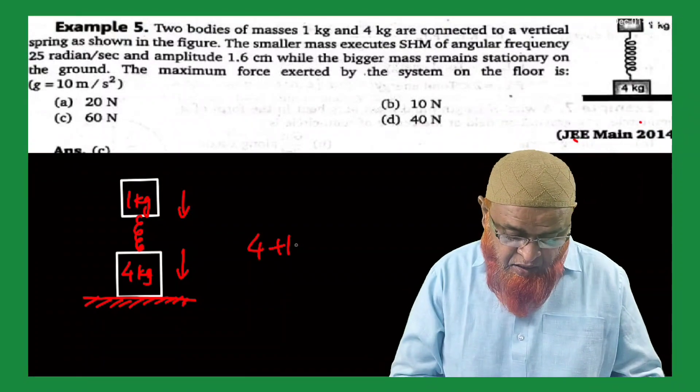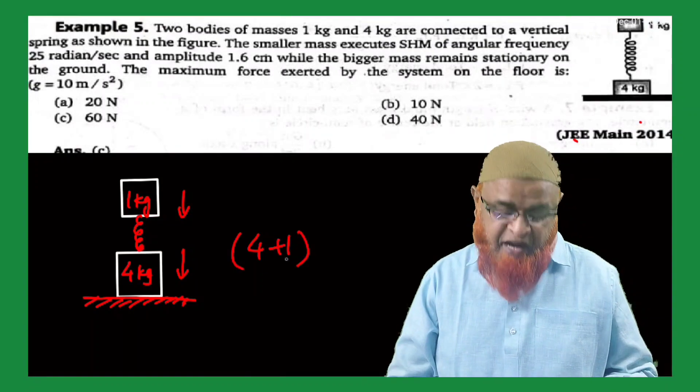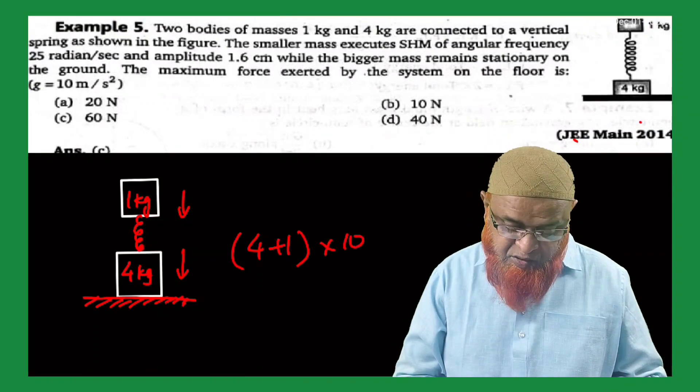It is understood that 4 plus 1 is going to be 5. And if you multiply this with 10 kg,